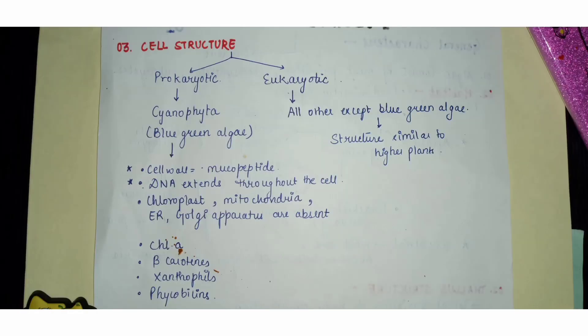The third characteristic is cell structure — we will look at a single cell: its type, shape, organelles, and how those organelles are arranged within the cell. Most algal cells are eukaryotic, meaning they have a defined nuclear membrane, double-membrane bound organelles, and a cell structure very similar to higher plants.